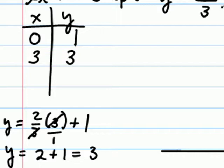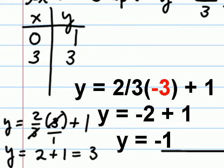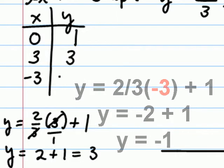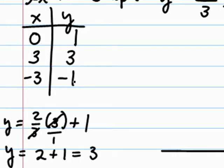Likewise, if we were to plug in a negative three for x, two-thirds times a negative three would give us a negative two, and a negative two plus one would give us a negative one. We've now come up with at least two ordered pairs, and we'll plot these in our coordinate system.